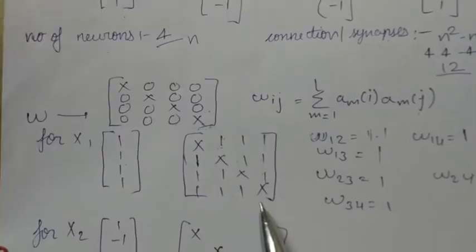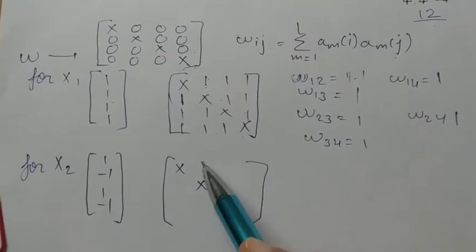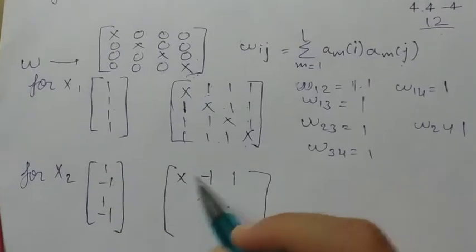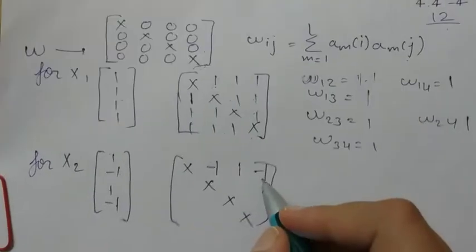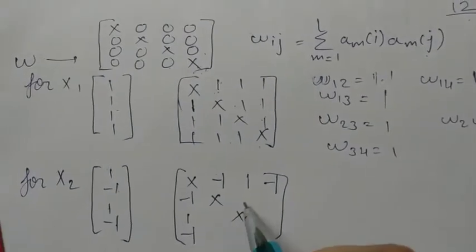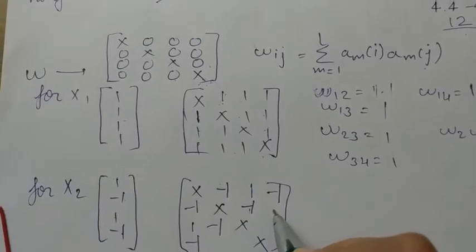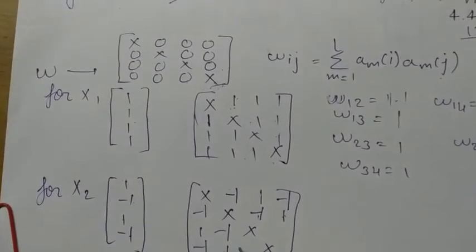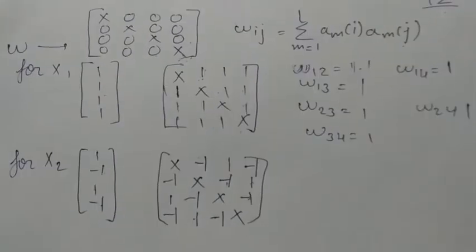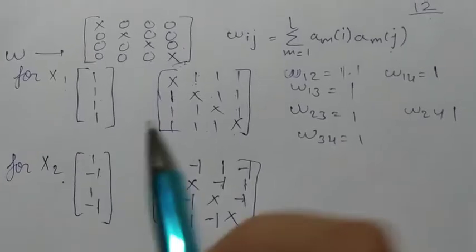Now the network will learn x2 and update the weight matrix again. For W12, positions 1 and 2 give minus 1. For positions 1 and 3 it is 1, and for 1 and 4 it is minus 1. The values for row 1 become minus 1, 1, and minus 1. For W23, positions 2 and 3 give minus 1, and W24 gives 1. W34, positions 3 and 4, gives minus 1, so W43 is also minus 1.